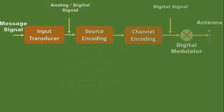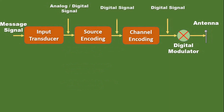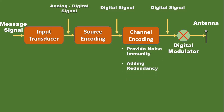The output of the source encoder will be a digital signal. The next block is the channel encoder. The channel encoder performs coding for error correction. During the transmission of a signal, due to noise in the channel, the signal may get altered. To avoid this, the channel encoder adds redundant bits to the transmitted data — these are the error correcting bits. Channel encoding covers providing noise immunity and adding redundancy. Block codes and cyclic codes can be used in adding redundancy.